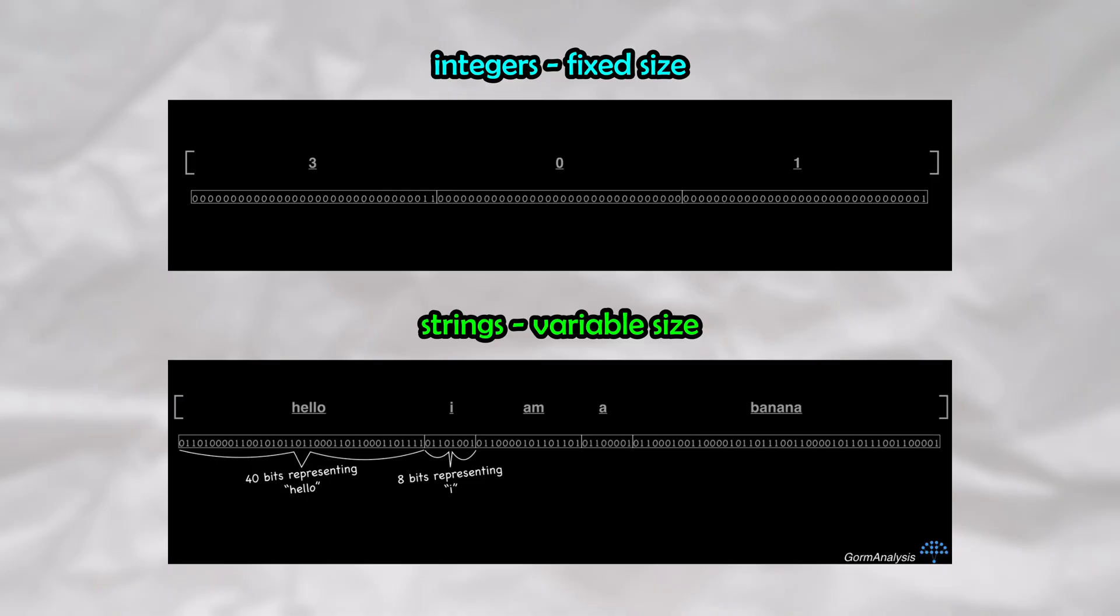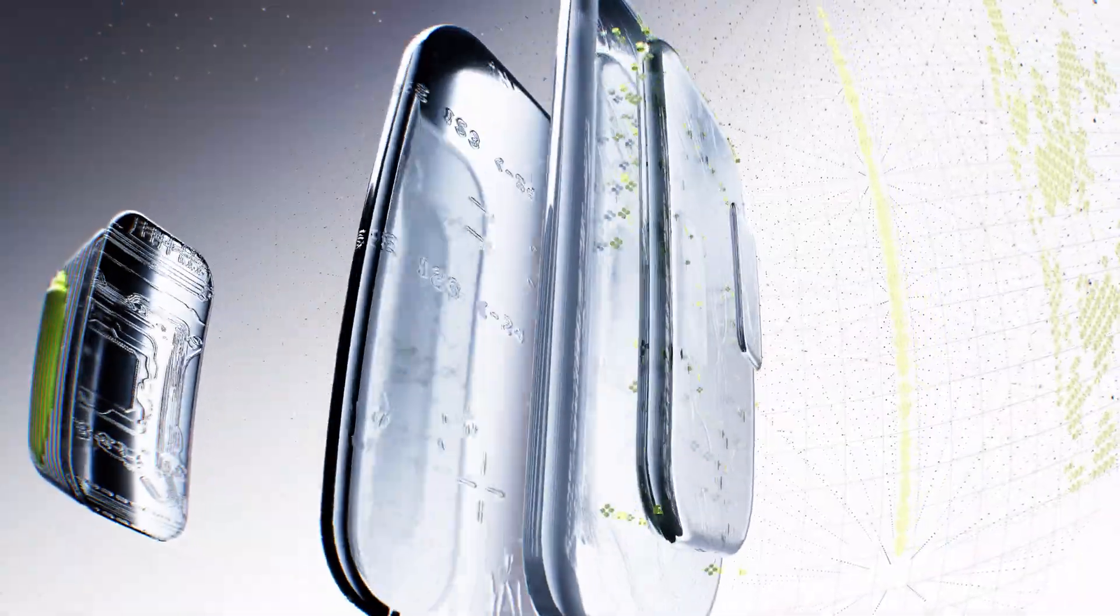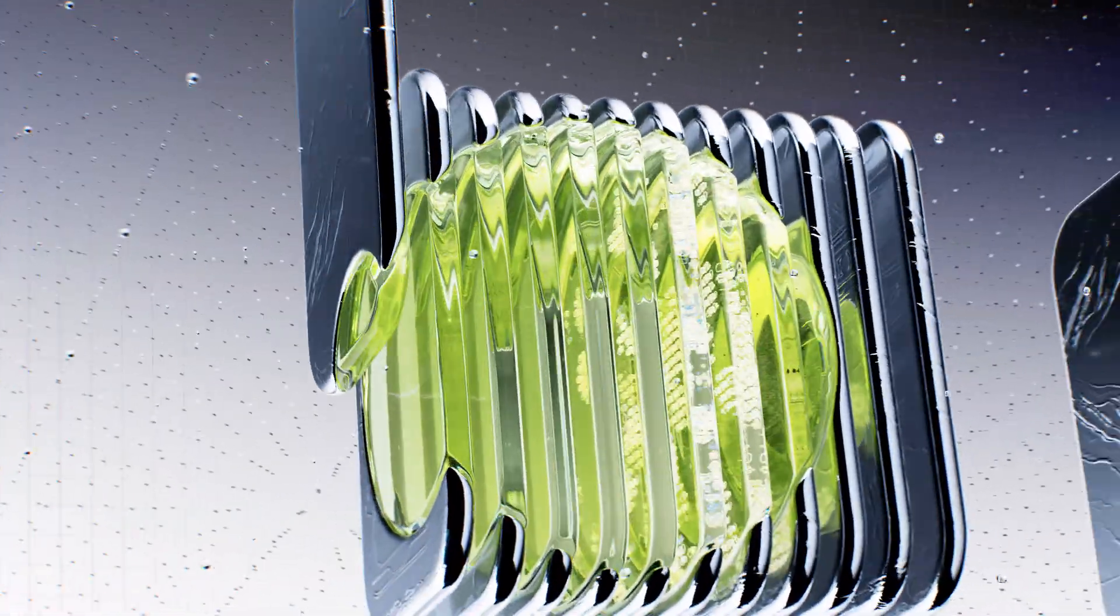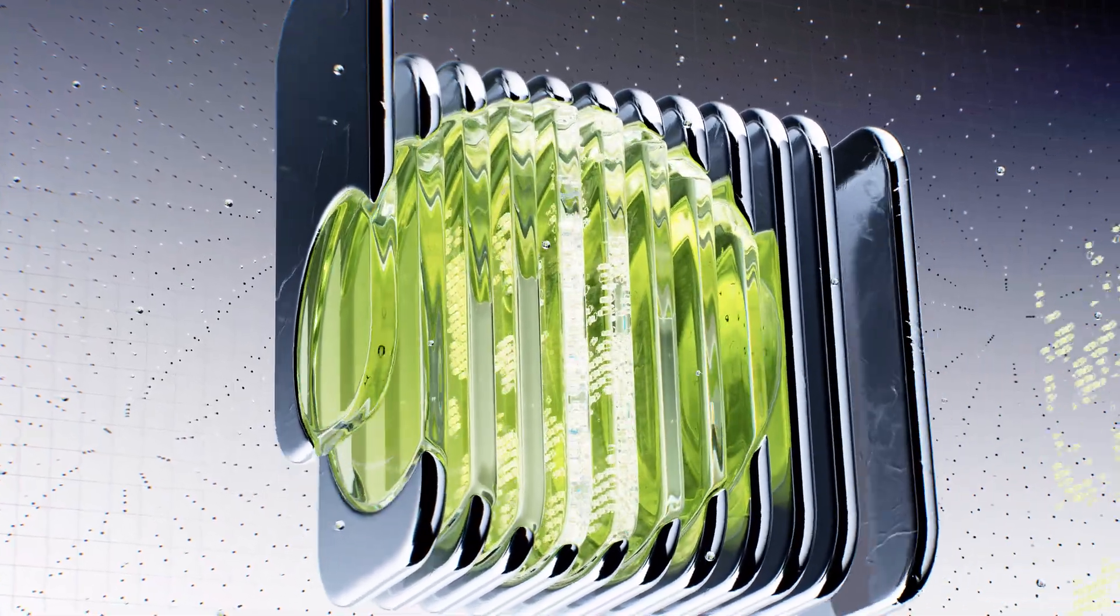With this approach, we lose the ability to index into our array in constant time, since we don't know how large each array location is. In reality, this is not how a high-level language like Python operates. It has a simple trick, enabling it to index into an array containing variable length strings in constant time. How does it do this?